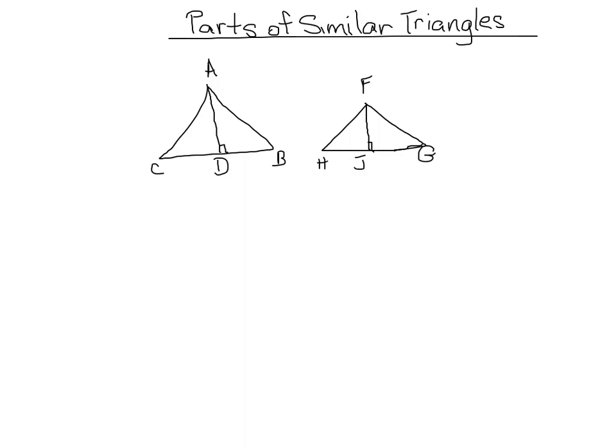In these triangles, we can see altitudes. If you don't remember what an altitude is, I'll remind you briefly. It's a line going from one vertex of our triangle to the opposite side, and it meets that opposite side at a right angle.